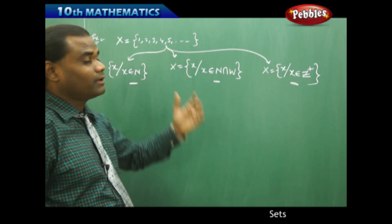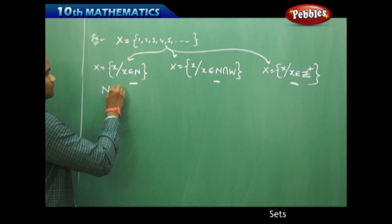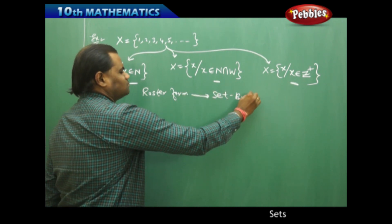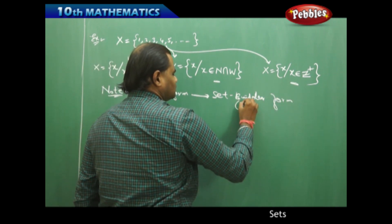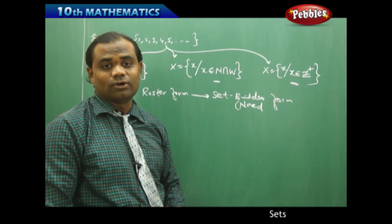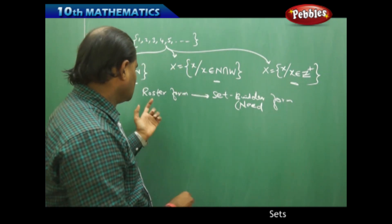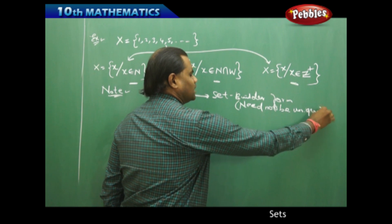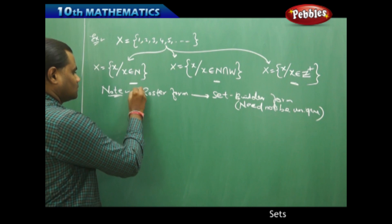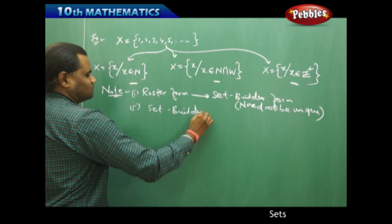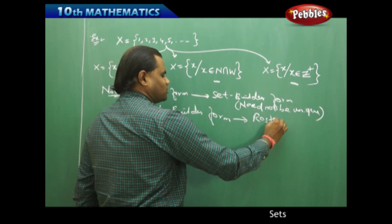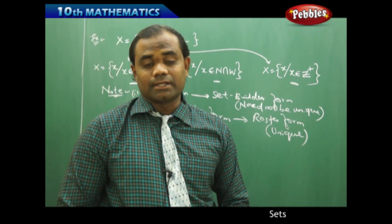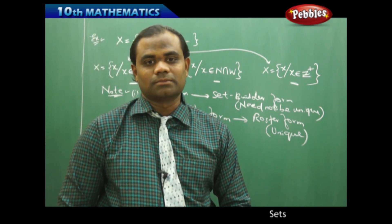As supported by this example, three different set builder forms arise from the one roster form consisting of elements 1, 2, 3, 4, 5... So the key note is: when converting from roster form to set builder form, the result need not be unique — more than three forms can arise. But when converting from set builder form to roster form, the result is always unique. This is the important learning outcome in understanding roster and set builder forms.